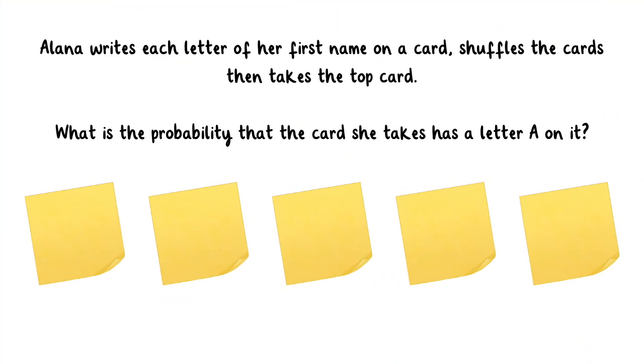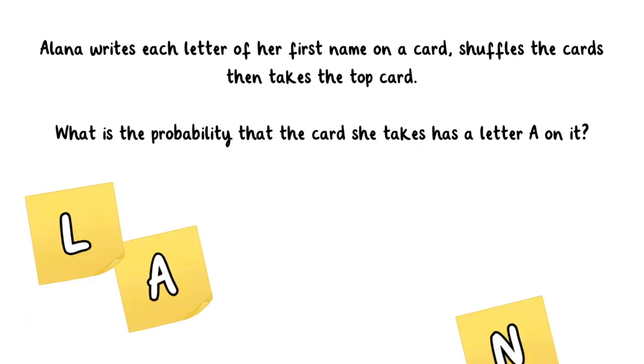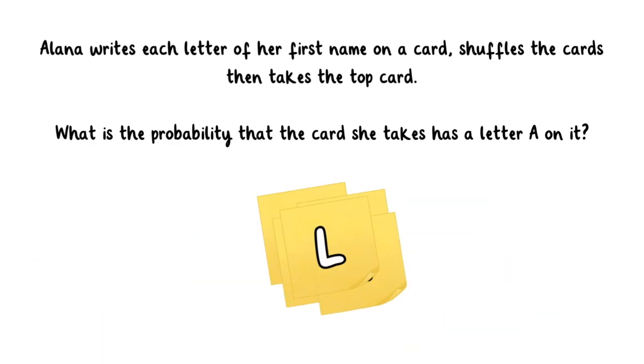Let's try it ourselves. Alana writes each letter of her first name on a card, shuffles the cards, then takes the top card. What is the probability that the card she takes has a letter A on it?